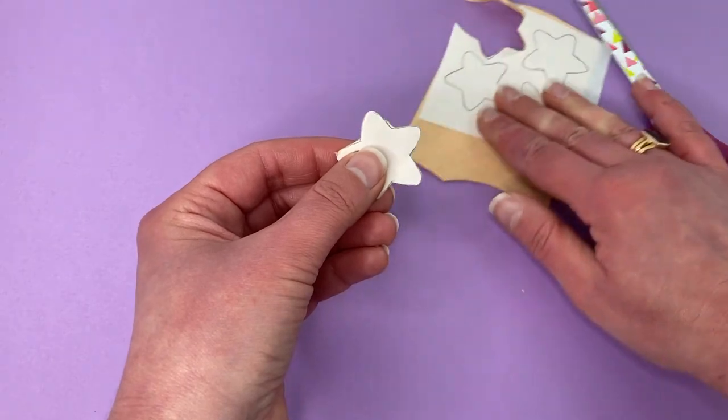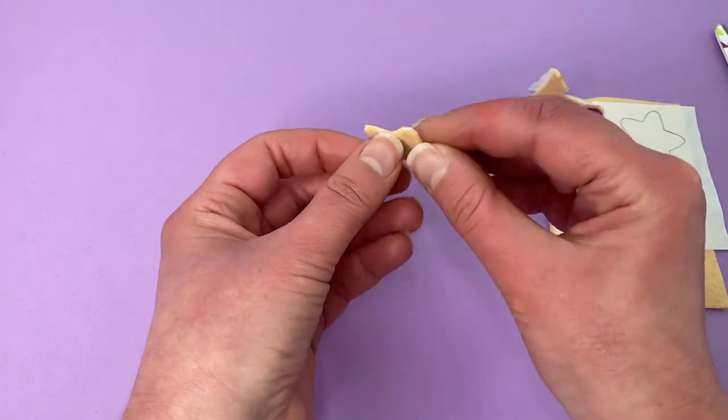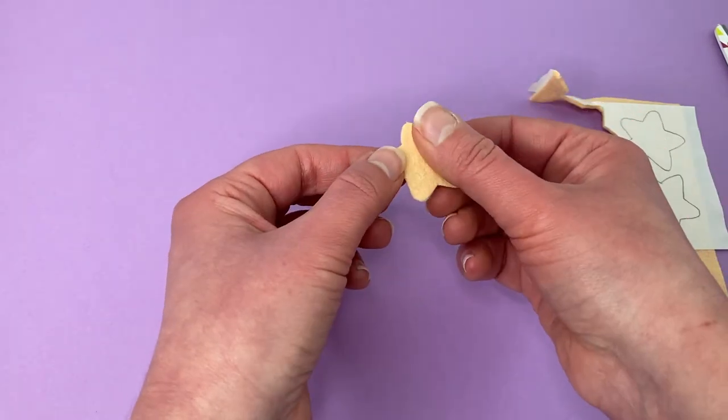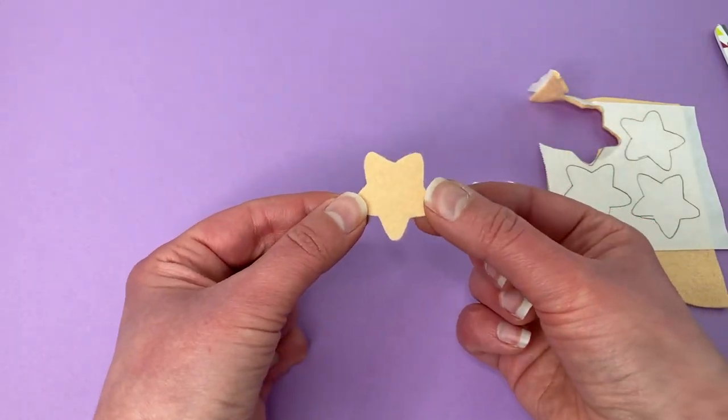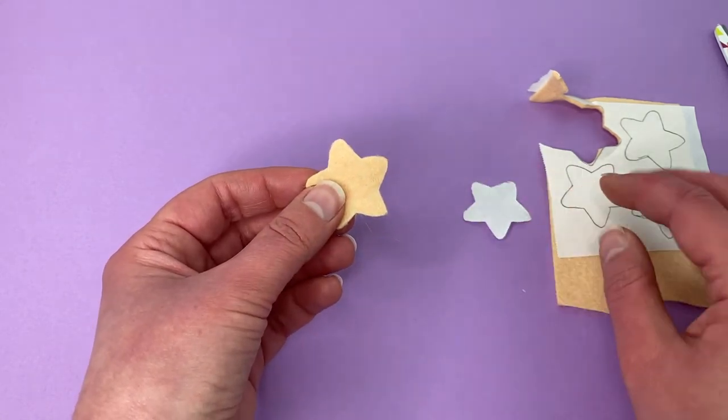Then, once you've finished with that, you just have to peel away the freezer paper. And look at that! It's a perfect little star all cut out from felt. And how easy was that?